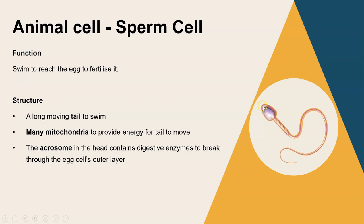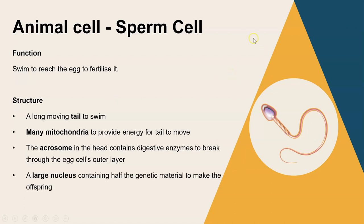In the middle section of the sperm there are lots of mitochondria so that energy can be released - that energy is used for the tail to move. The acrosome is the little part right at the top of the head and contains digestive enzymes. When the sperm reaches the egg, those digestive enzymes are released and break down the outer layer so the sperm's nucleus can combine with the egg cell. Lastly it has a large nucleus containing half the genetic material required to make the new offspring.